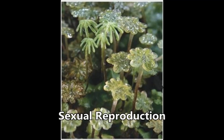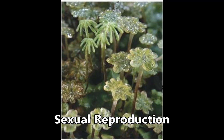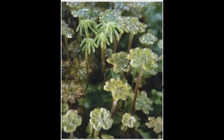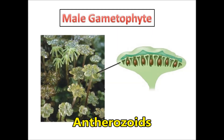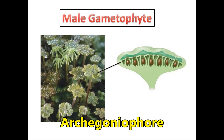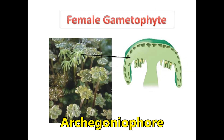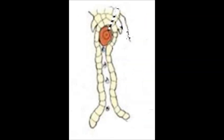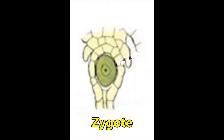Sexual Reproduction: Male and female sex organs are produced either on the same or on different thalli. The male gametes are called antherozoids. The female gametes are produced in the archegoniophore. Antherozoids reach the archegonia with the help of water and fuse with the egg, and a zygote is formed.